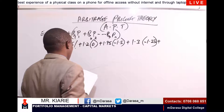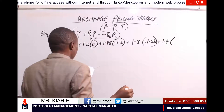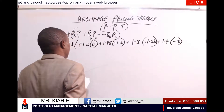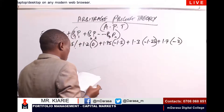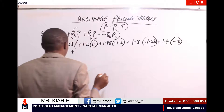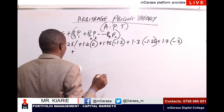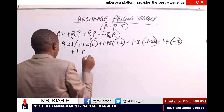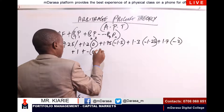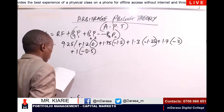Then for the share market index factor, the beta is 1.7, multiplied by the risk premium which is 10 minus 12, giving negative 2. Then for the industrial production factor, beta is 1, and the risk premium is 7 minus 7.5, giving negative 0.5.